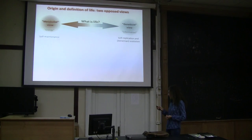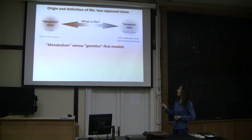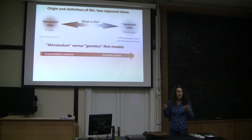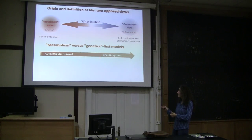And of course, these two definitions translate into two different kinds of models of how life emerged. For metabolism hypothesis, the first thing that appears is an autocatalytic network, a network of reactions, a metabolism if you want, and a genetic system comes only later.